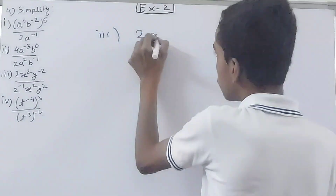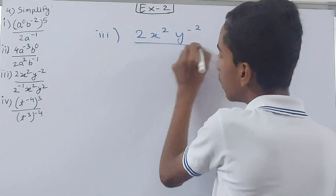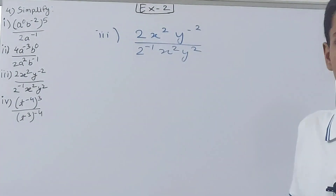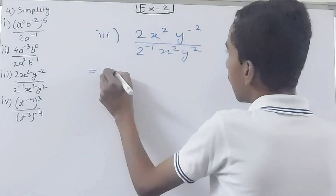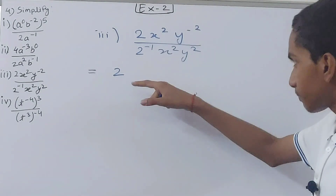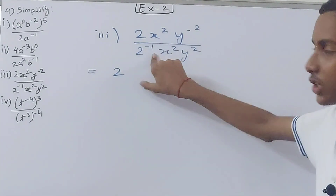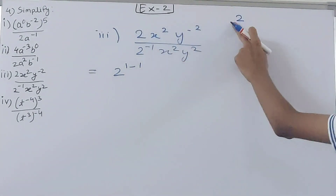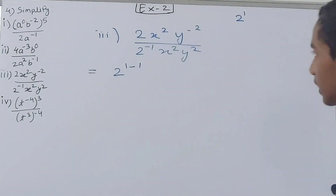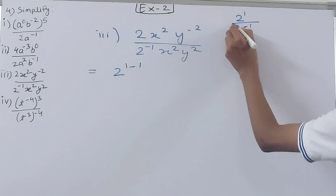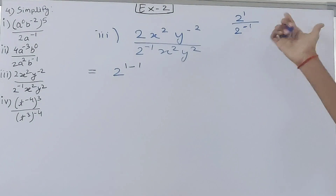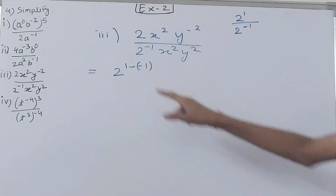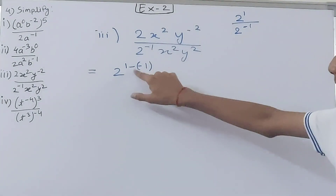The third part is 2x² y to the power minus 2, upon 2 to the power minus 1, x squared, y squared. Division is there so we subtract the powers. For 2: this 2 can be written as 2 to the power 1, and the other is 2 to the power minus 1, so we do 1 minus (minus 1) — note there are 2 minus signs, not 1.